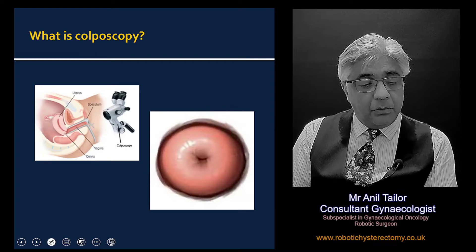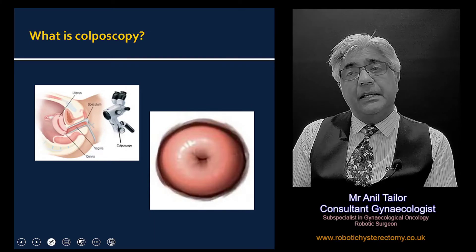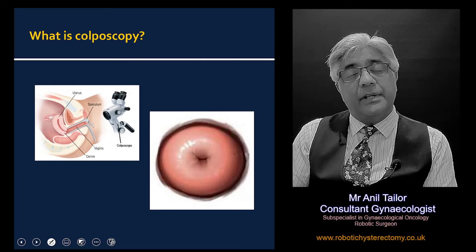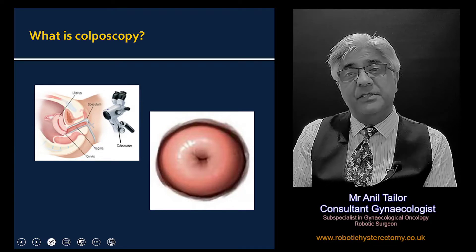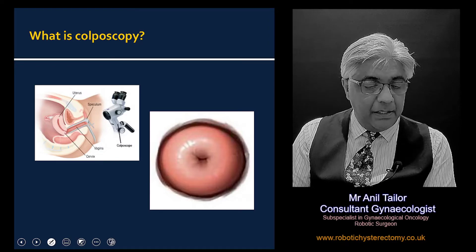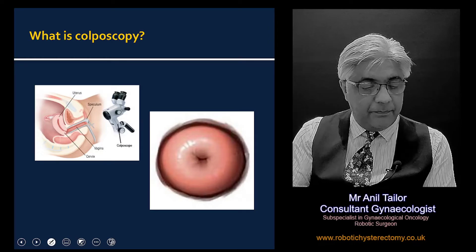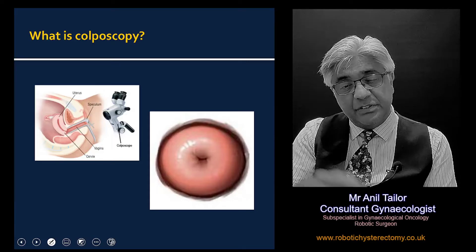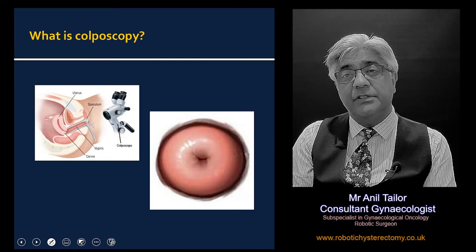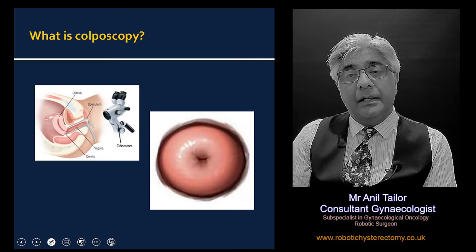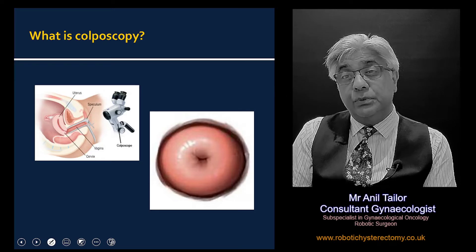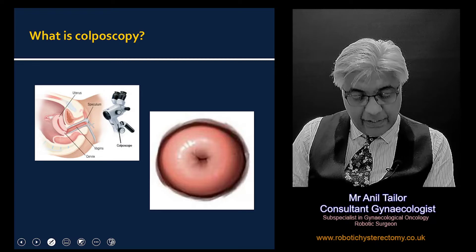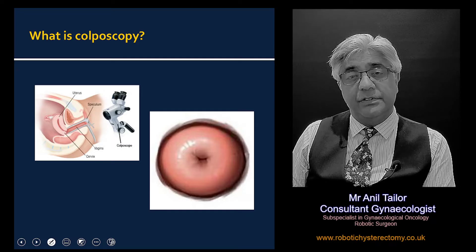The loop biopsy is generally carried out during a colposcopy examination. A colposcopy examination is where we examine the cervix under magnification and wash the mucus away from the cervix using a mild vinegar solution. That acetic acid — the vinegar solution — also shows up the abnormal areas as a patch of white. That is how we identify the abnormal cells on the cervix.